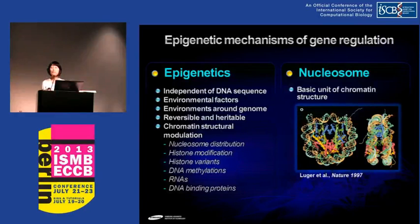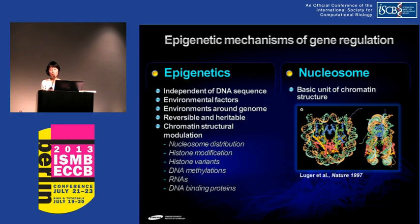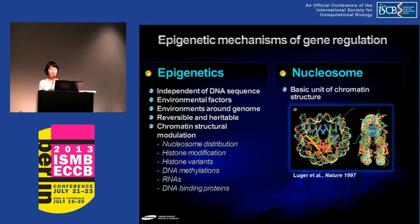In epigenetics — epi means 'over' — we try to understand the molecular mechanism that affects morphological variation, and this morphological variation is transmitted to the progeny. But the morphological variation cannot be explained by the DNA sequence alone, so that can be independent of DNA sequence or the interaction between genetic information and environment.